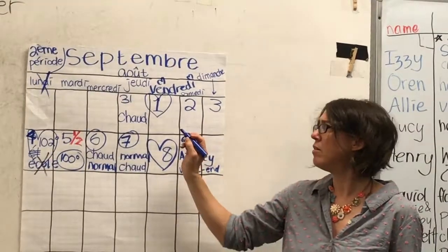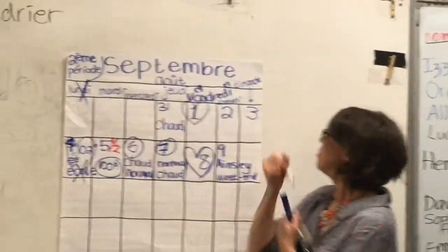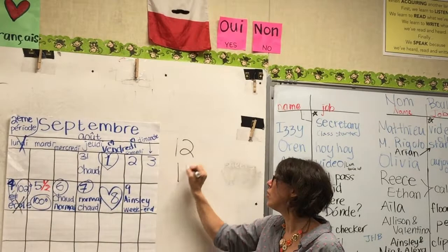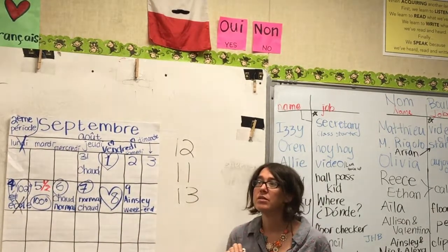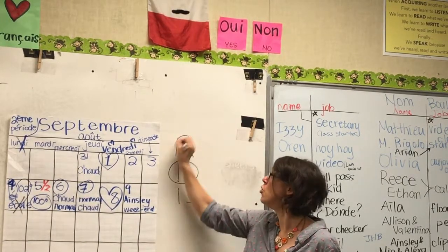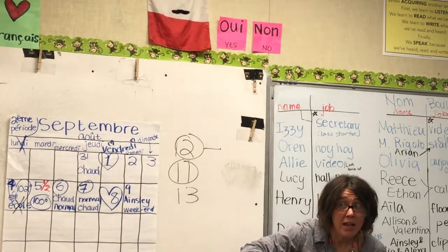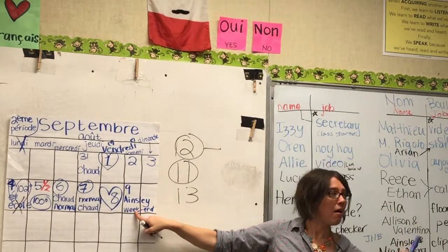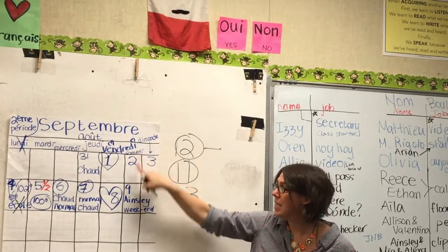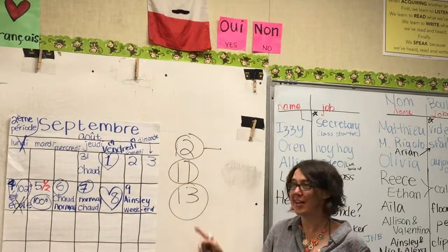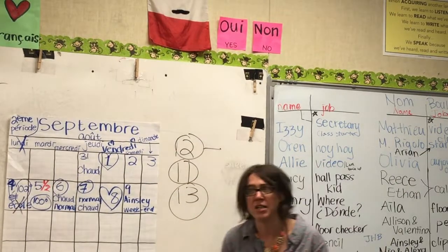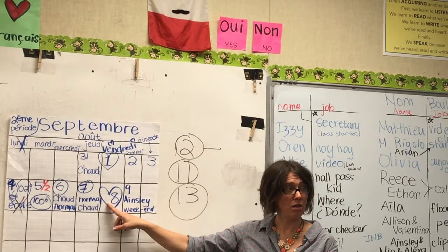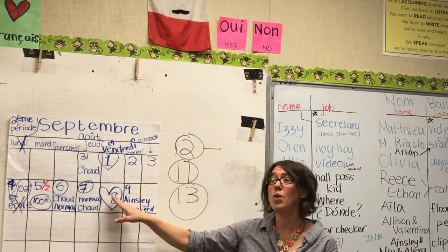Tu as douze ans. Aujourd'hui. Oui, oui. Ou onze, ou treize. Onze. Douze. Ok. Classe, aujourd'hui... Merci. Aujourd'hui, oui, oui. Et après, neuf. Ainsley aura 13 ans, n'est-ce pas? Oui. Classe, après, tu dis Ainsley — j'ai 10 ans. Oh! Ainsley! Aujourd'hui, oui, oui. Non, elle est quand même 12 ans. Je suis toujours en 12 ans.